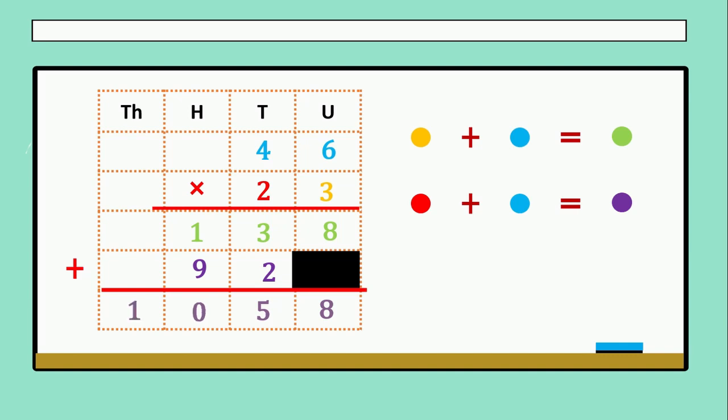Remember! 1 digit for 1 position. 1 in the thousands. 0 in the hundreds. 5 in the tens. And 8 in the units. 46 times 23. That is equals to 1058.